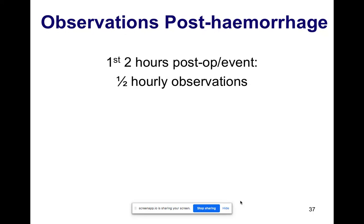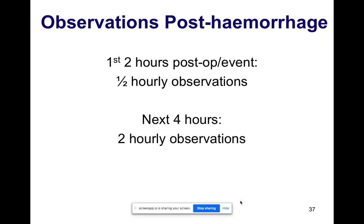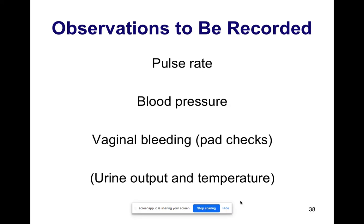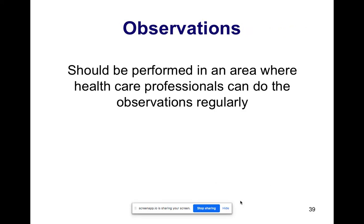These are the observations for postpartum hemorrhage. For the first two hours post-operatively, do observations every 30 minutes. The next four hours, do two-hourly observations. After that, four-hourly observations. In the first two hours, the patient will be in recovery. Things to check include pulse rate, blood pressure, vaginal bleeding — using pad checks — urine output, and temperature.